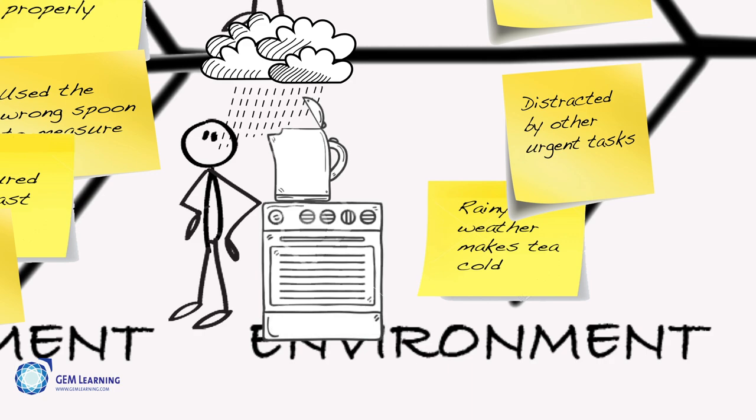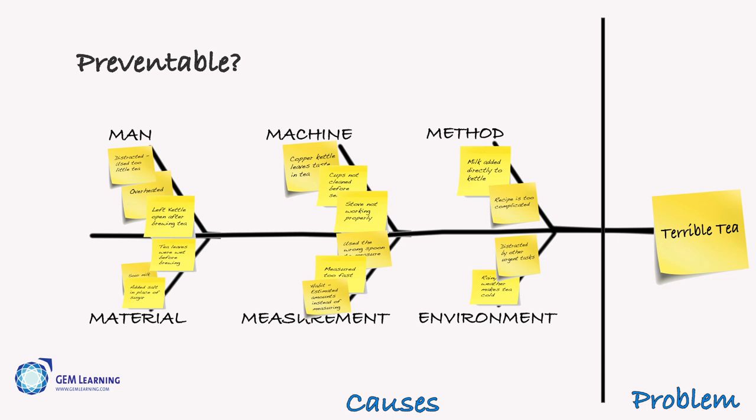Next, figure out ways to fix these causes. For each cause, ask whether you know how to prevent it. If yes, mark it with a C. That's controllable.